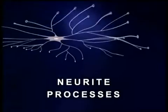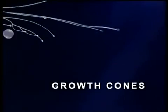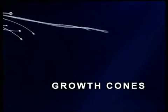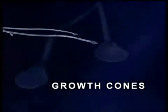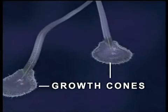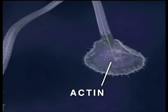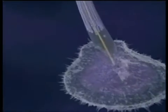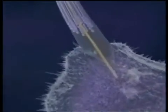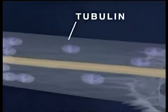At the end of each neurite is a growth cone where structural proteins are assembled to form the cell membrane. Two principal proteins involved in growth cone function are actin, which is responsible for the pulsating motion seen here, and tubulin, a major structural component of the neurite membrane.